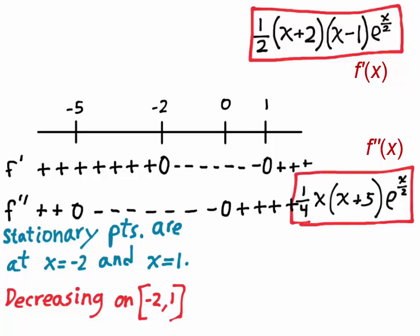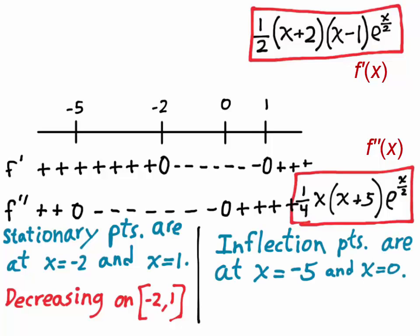And you can determine that the inflection points of this function, that those are the places where the second derivative changes signs, are at negative 5 and 0, and that the interval on which the function is concave down would be the interval from negative 5 to 0.